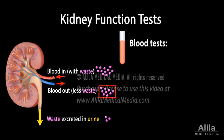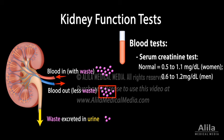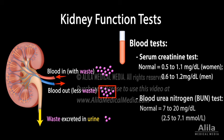Two substances are usually measured: creatinine, a waste product from the normal turnover of muscles, and urea, the primary nitrogenous waste derived from metabolism of proteins. Blood levels of these substances rise as kidney function declines.